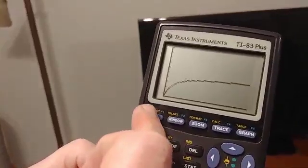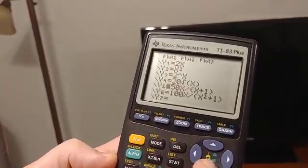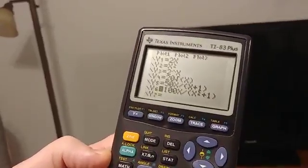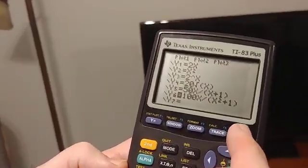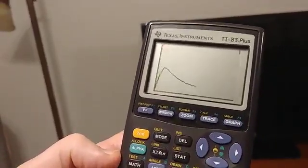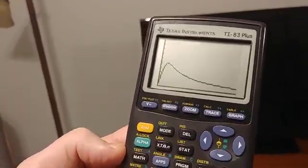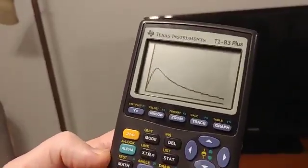And then the last one, it's also a rational function, but it's basically x over x squared plus 1. So it has an interesting result. Watch this. Very rapid growth at first, but it levels off and then the number of cases decreases eventually to zero.